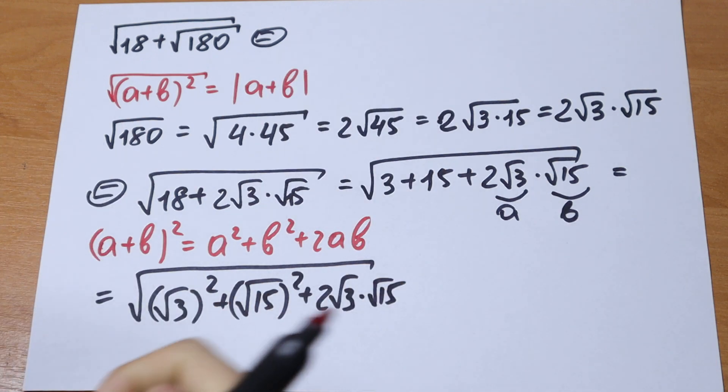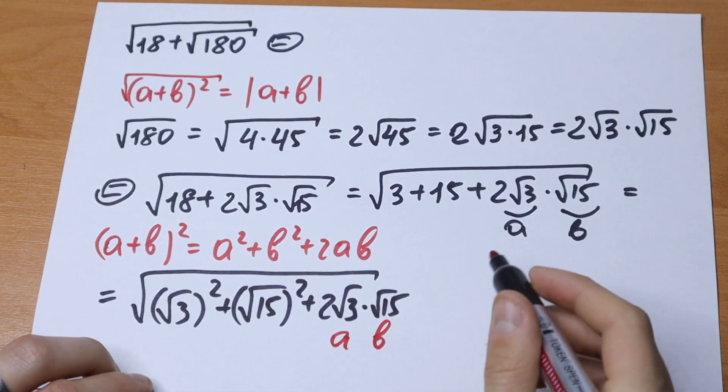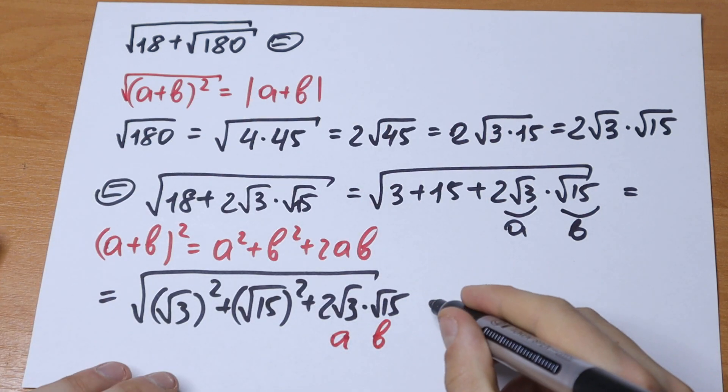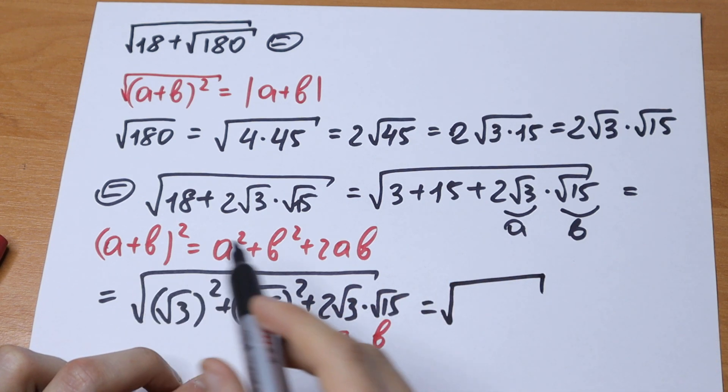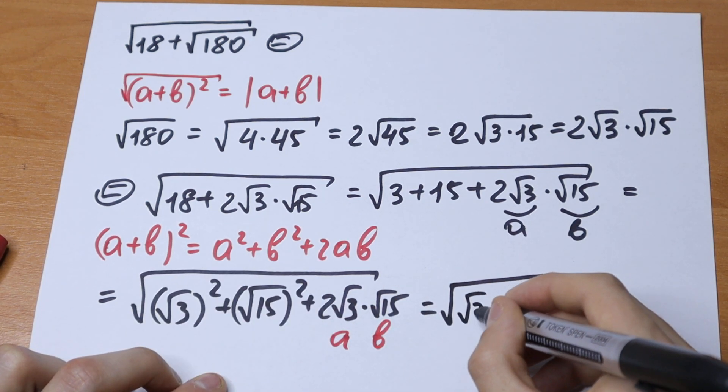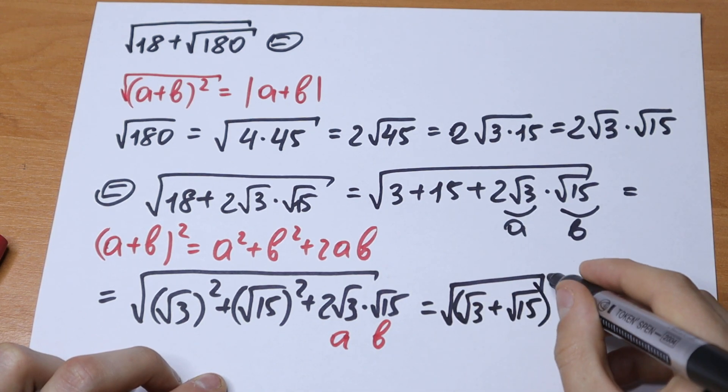This is our a, this is our b, and this is our formula. So we will receive square root of (√3 + √15)².